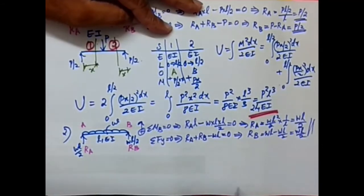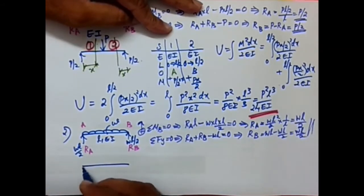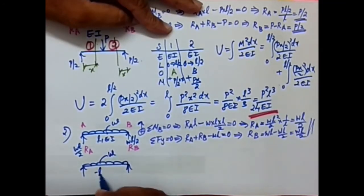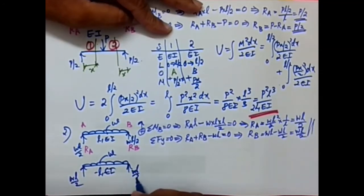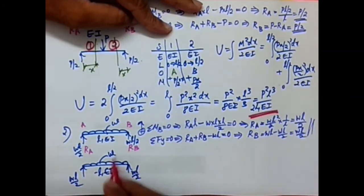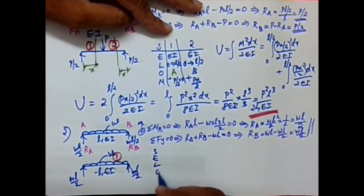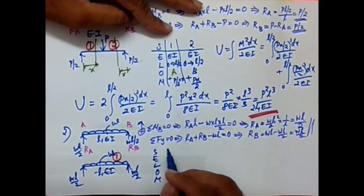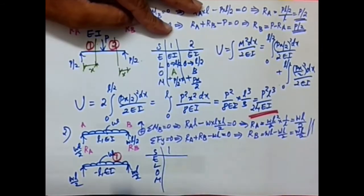We can now represent the beam with its forces: WL/2 at A, WL/2 at B, and the UDL W over the span L with constant EI. How many point load locations? Just one span with no concentrated loads within, so there is just one segment.